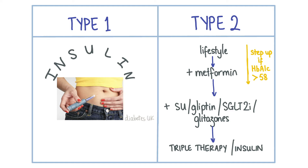The first line management for type 2 diabetes mellitus is lifestyle management — exercise and diet advice including increasing fibre, avoiding carbohydrates that have a high glycaemic index, and reducing intake of saturated and trans fats. If lifestyle measures do not improve glycaemic control, the first line treatment is metformin tablets. Metformin is a biguanide which works by increasing sensitivity of cells to insulin and by decreasing gluconeogenesis. It cannot be given to a patient with an eGFR of less than 30 as there is a risk of lactic acidosis.